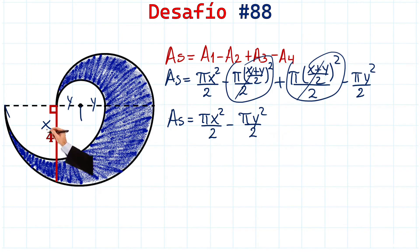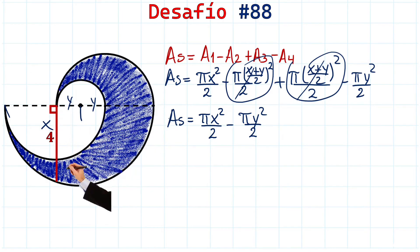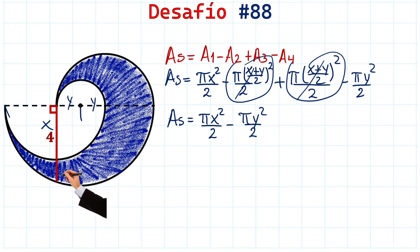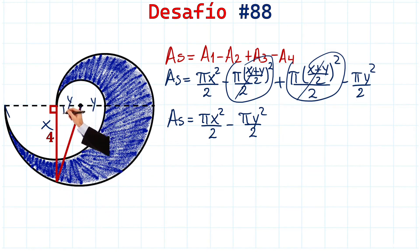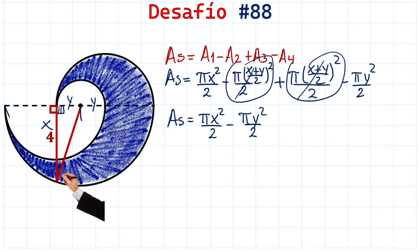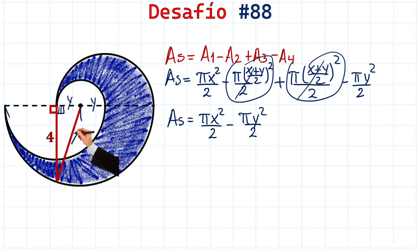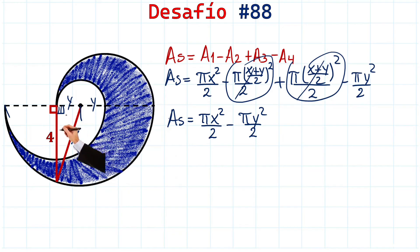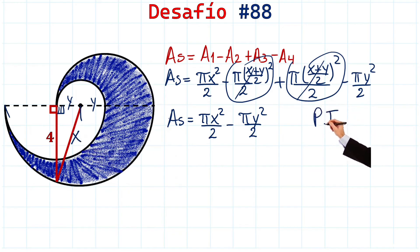But it's not over yet — pay close attention. Here we have a line that measures 4 and it is perpendicular to the diameter of the semicircle. We can draw a line from this point to the center of the semicircle. We get a right triangle because there will also be 90 degrees here. The hypotenuse of this triangle is x, which is the radius of the large semicircle.